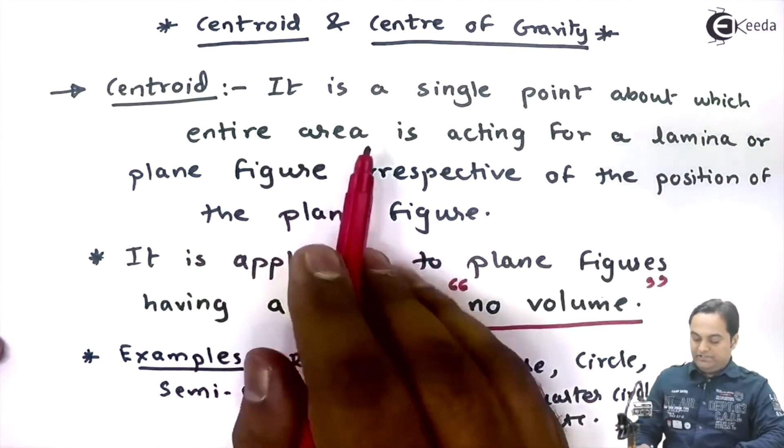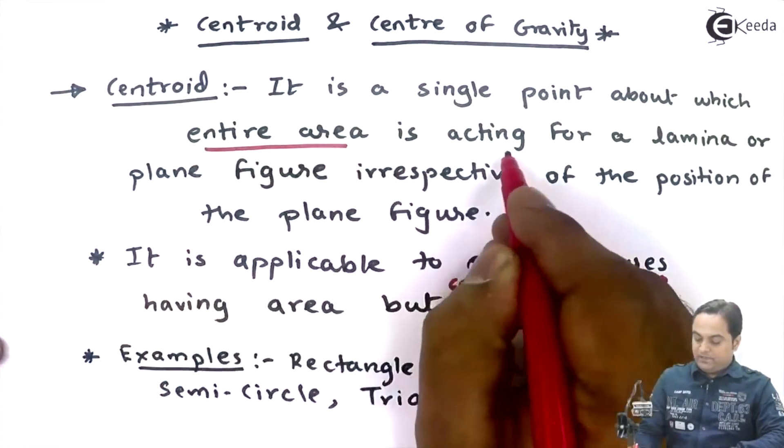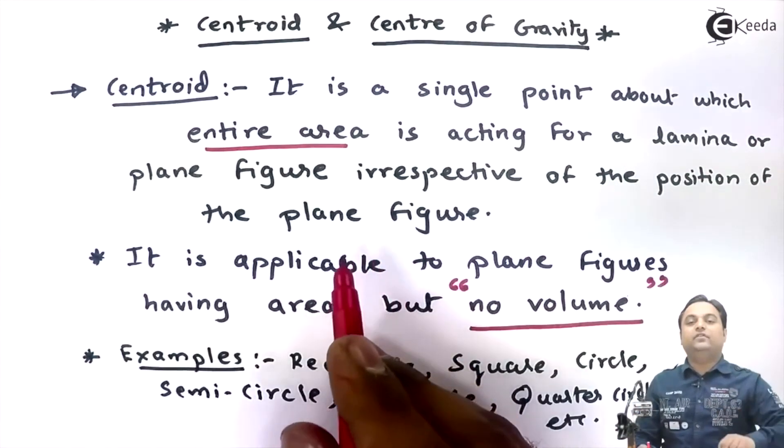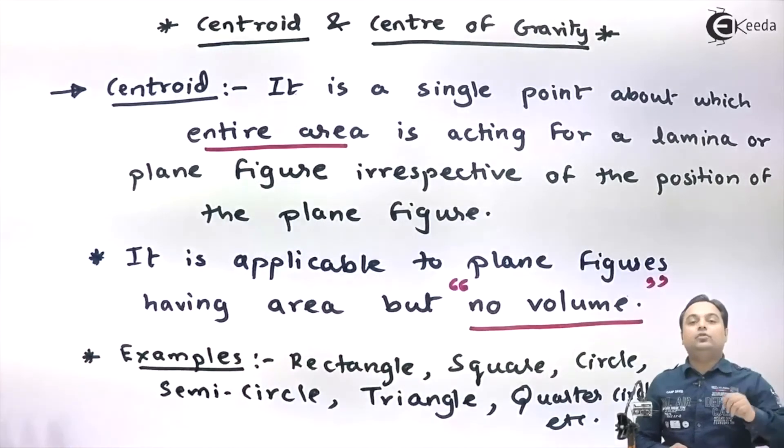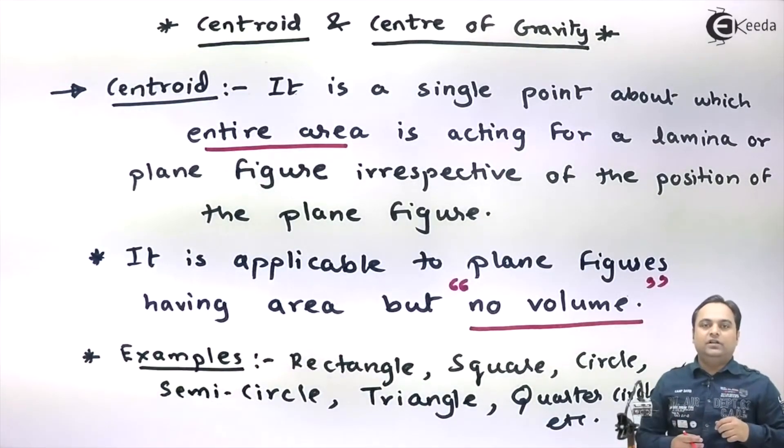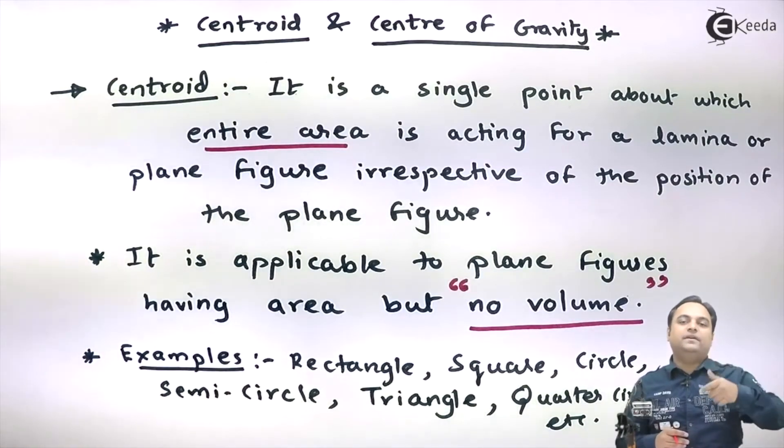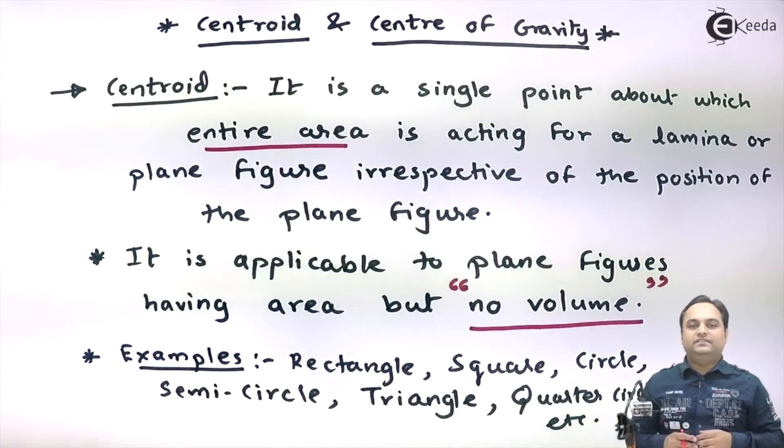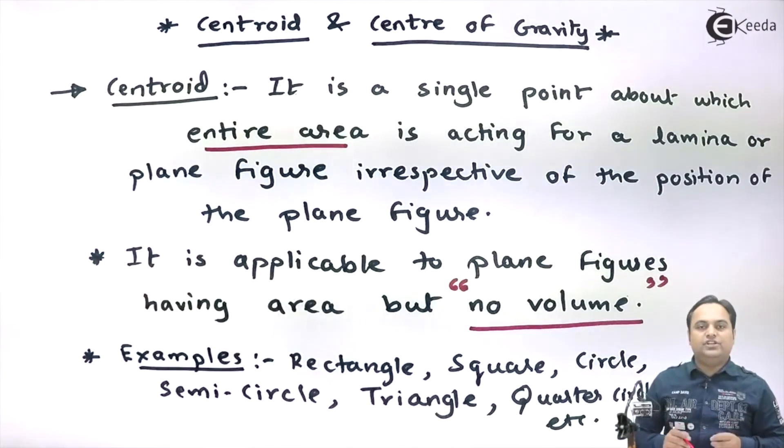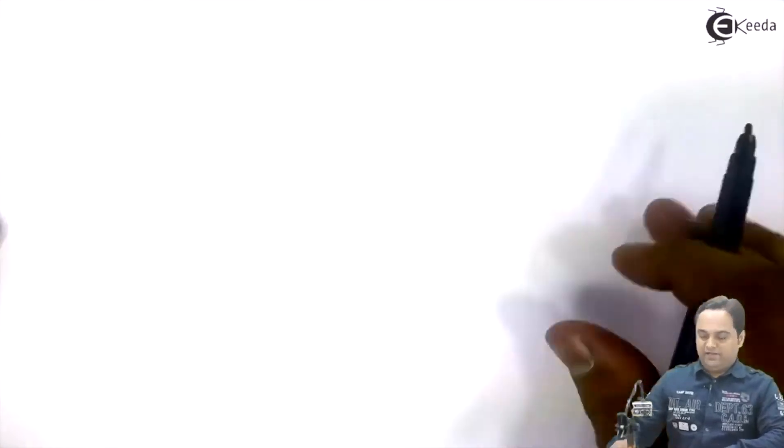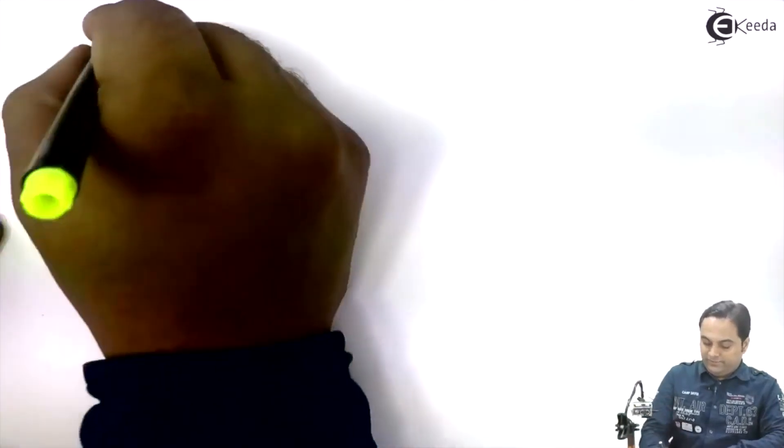From this here it is very much clear about the centroid, the definition part - that it is a single point about which the entire area is acting for a lamina or plane figure. Now let me draw a diagram which will explain you the concept of centroid.